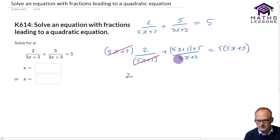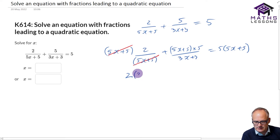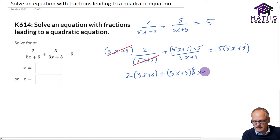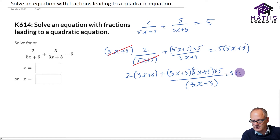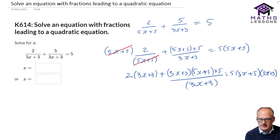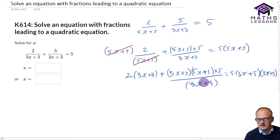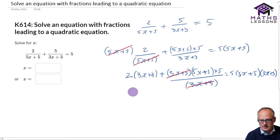Now we're times everything by 3x plus 3, so we must times this by 3x plus 3. We want to times this by 3x plus 3, so we're going to get 3x plus 3 times 5x plus 5 times by the 5, all over 3x plus 3. We go times this by 3x plus 3 - 3x plus 3 times everything on the top and 3x plus 3 times everything on the bottom - so we can now cancel those out.